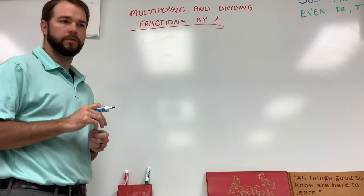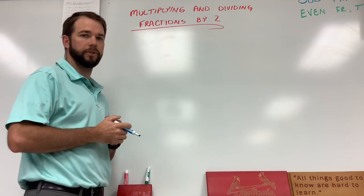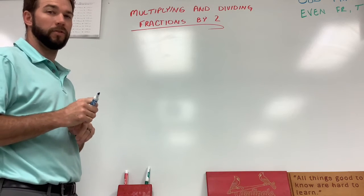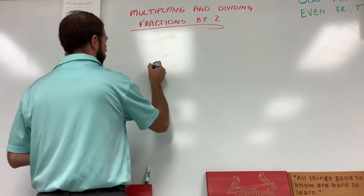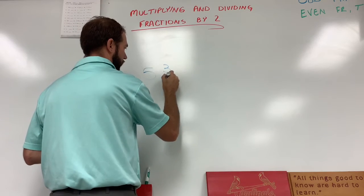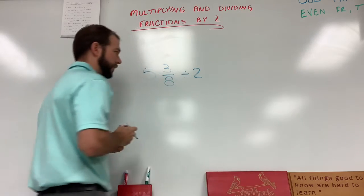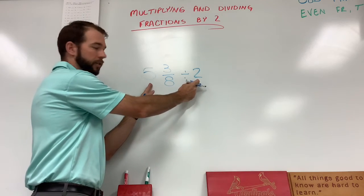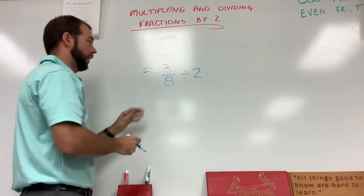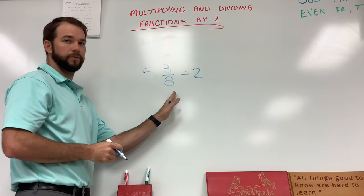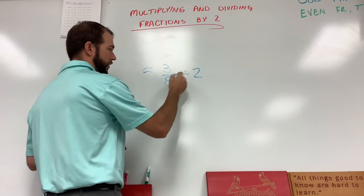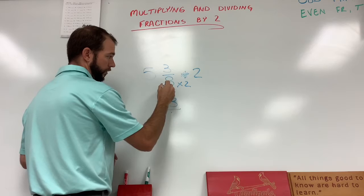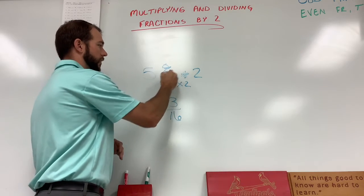I'm going to try one more — this one is a little trickier. This is the hardest problem you'll have with dividing fractions by two, and that's when we have a mixed number where the whole number is odd. So let's try five and three eighths divided by two. We have two math problems: a whole number divided by two and a fraction divided by two. This time, since we have an odd number, I'm going to do the fraction first. I change the division to multiply by two: three over eight times two gives sixteen, so three sixteenths is our fraction.